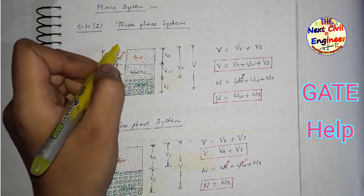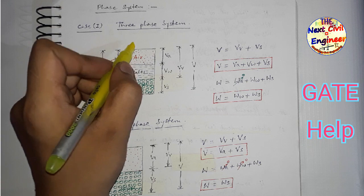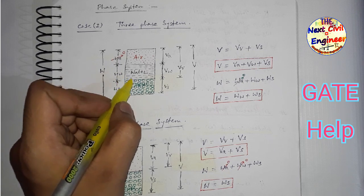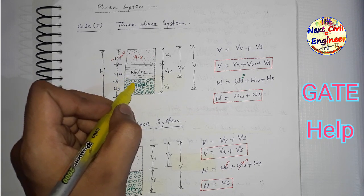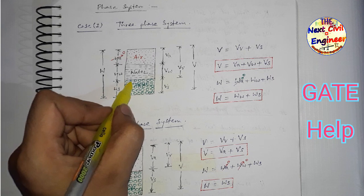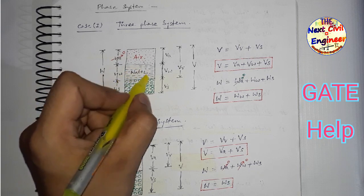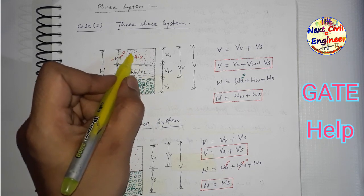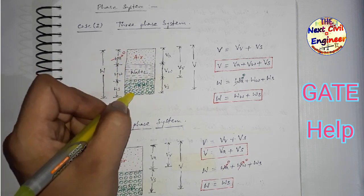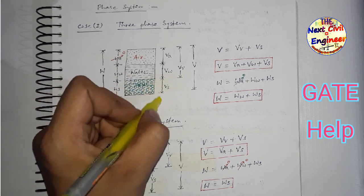Soil को study करने के लिए हम लोग दो तरीके के phase system का generally use करते हैं। First है three phase system। आइए देखते हैं three phase system में क्या क्या होता है। Three phase system का यह diagram आप देख रहे हैं जिसमें सबसे नीचे soil के solids हैं जो green color से show किये गये हैं।